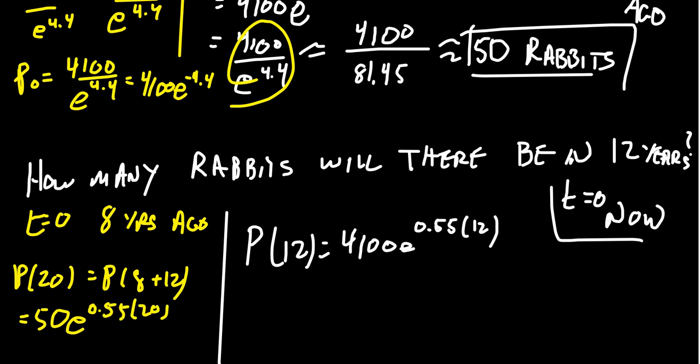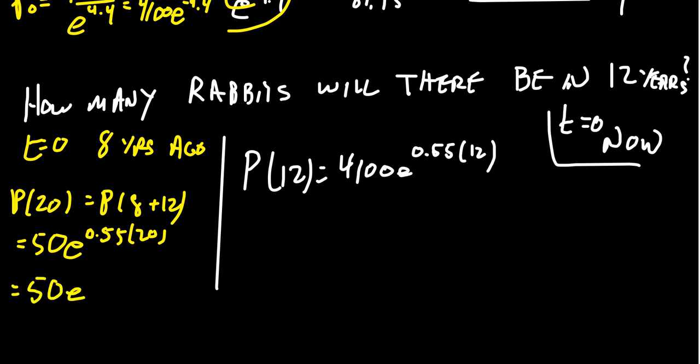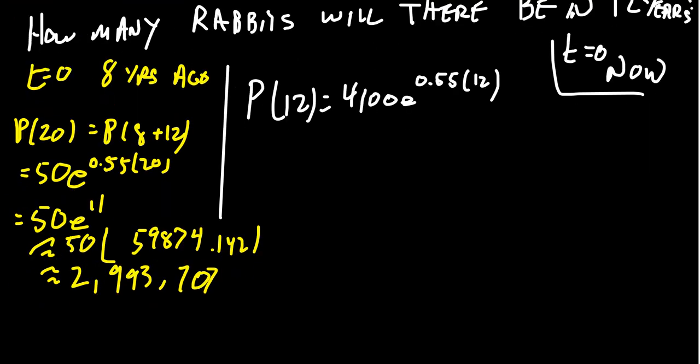If you carry forward that calculation, 0.55 times 20 is 11, so you get 50 times e^11. e^11 is approximately 59,874.142, times that by 50, that would give you an estimate of about 2,993,707 bunnies on the island. Wow, that's a lot of bunnies. There's a reason I'm using rabbits here - they're known for their growth rate. As Judy Hopps says in the Disney movie Zootopia, rabbits are known for how good they are at multiplication.